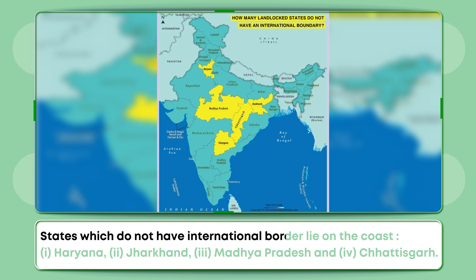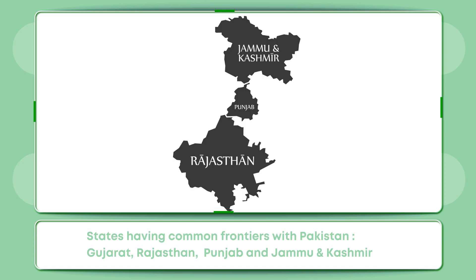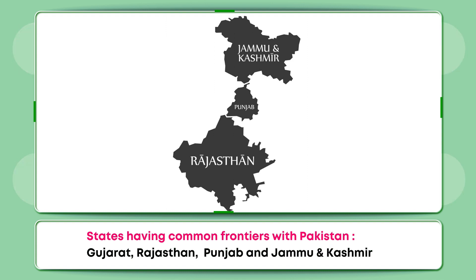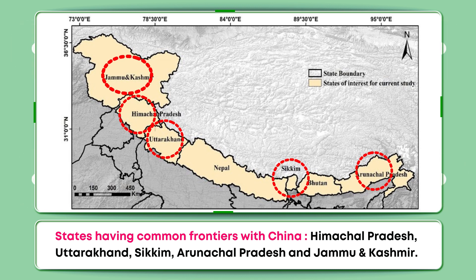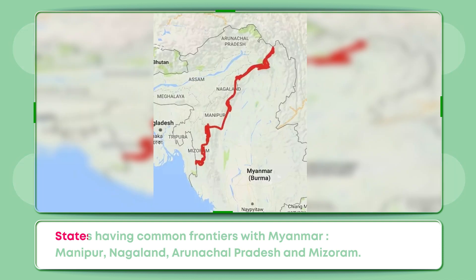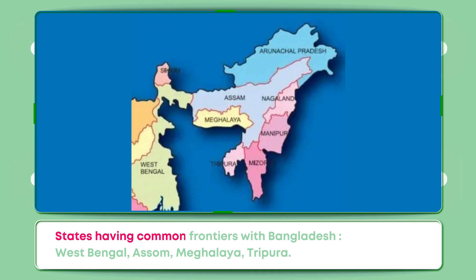States which do not have international borders and lie on the coast include Haryana, Jharkhand, Madhya Pradesh and Chhattisgarh. States having common frontiers with Pakistan: Gujarat, Rajasthan, Punjab and Jammu and Kashmir. States having common frontiers with China: Himachal Pradesh, Uttarakhand, Sikkim, Arunachal Pradesh and Jammu and Kashmir. States having common frontiers with Myanmar: Manipur, Nagaland, Arunachal Pradesh and Mizoram. States having common frontiers with Bangladesh: West Bengal, Assam, Meghalaya and Tripura.